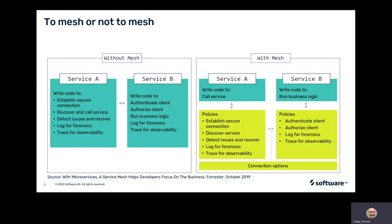Implementing all these capabilities into each microservice again and again requires a lot of effort and is error prone. The service mesh framework can help here to make life easier for developers. It provides all the capabilities, usually via service mesh proxies or sidecars that are deployed along with the microservices. The big plus is that microservice developers can concentrate on implementing business logic — all the infrastructure-related capabilities do not need to be addressed.